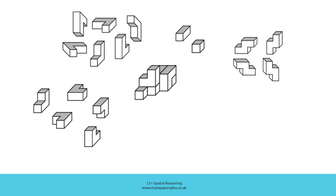There is also a possibility that this type of block could be used in the figure. This section of the block could be the back section here, with this section being the top part like this. That would mean that this L-shaped block would be resting on this section of that block. Then we would have an L-shaped block like this with a cube supporting this section. So there are several different ways that this figure could be composed. Let's remember that as we now reconsider those five answer options.